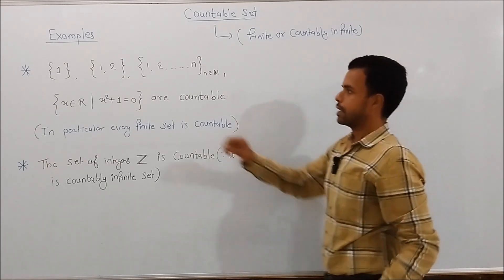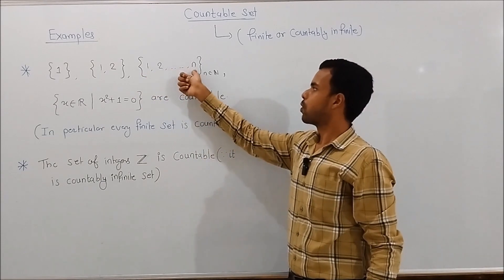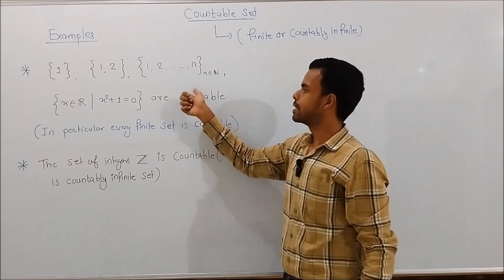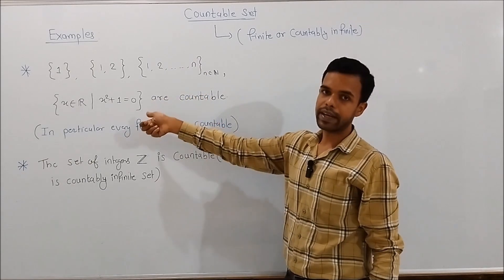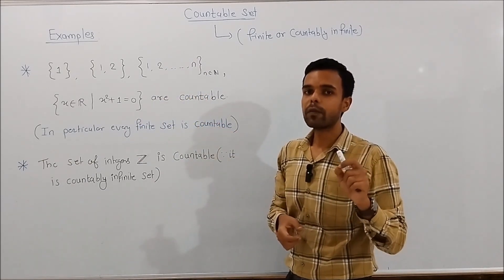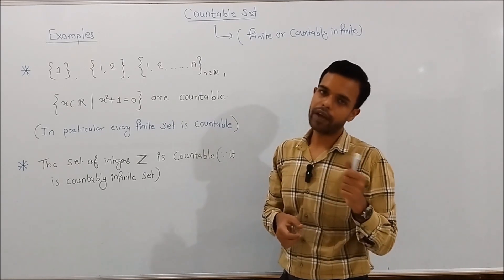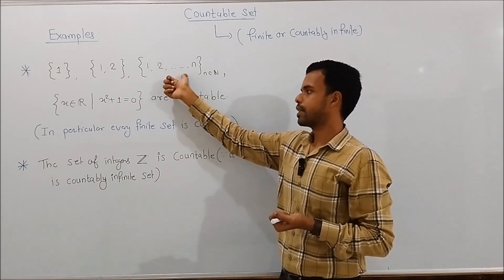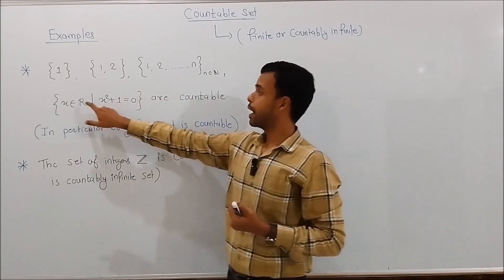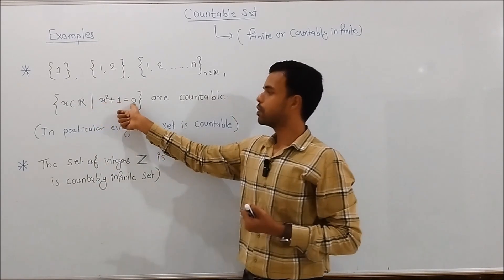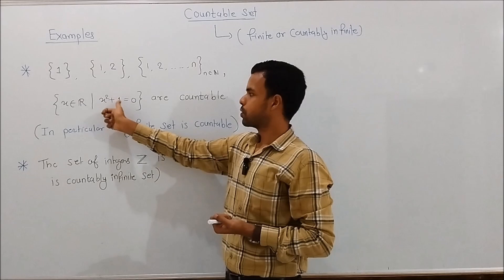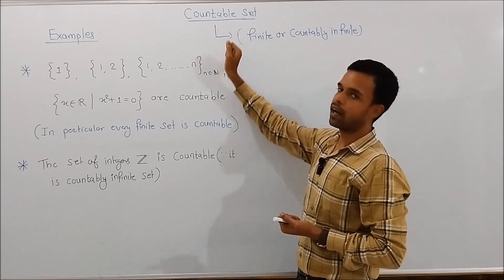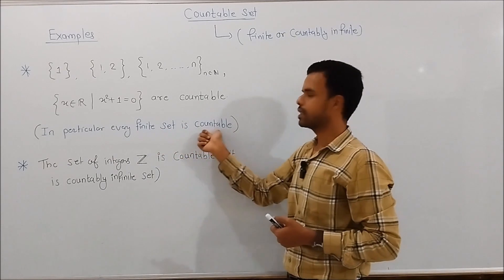So let's start the examples. The set containing 1, the set containing 1 and 2, and so on where n belongs to the set of natural numbers, and the set of x in the reals such that x squared plus 1 equals 0 — all these sets are countable sets because they are all finite sets. A set S is said to be finite if it is either empty or has a finite number of elements. Clearly all three sets contain a finite number of elements, so they are finite sets. In particular, the last set is empty because the equation x squared plus 1 equals 0 has no solution in real numbers, so it is also a finite set. Hence by definition they are all countable sets. In particular, every finite set is a countable set.